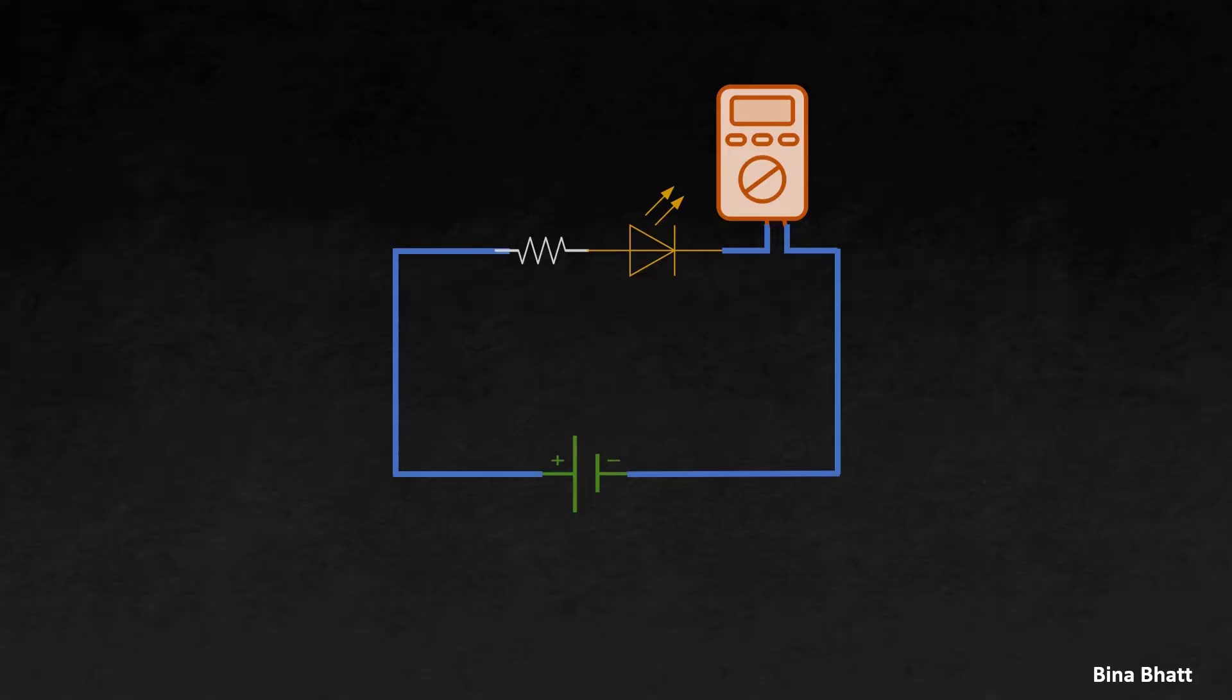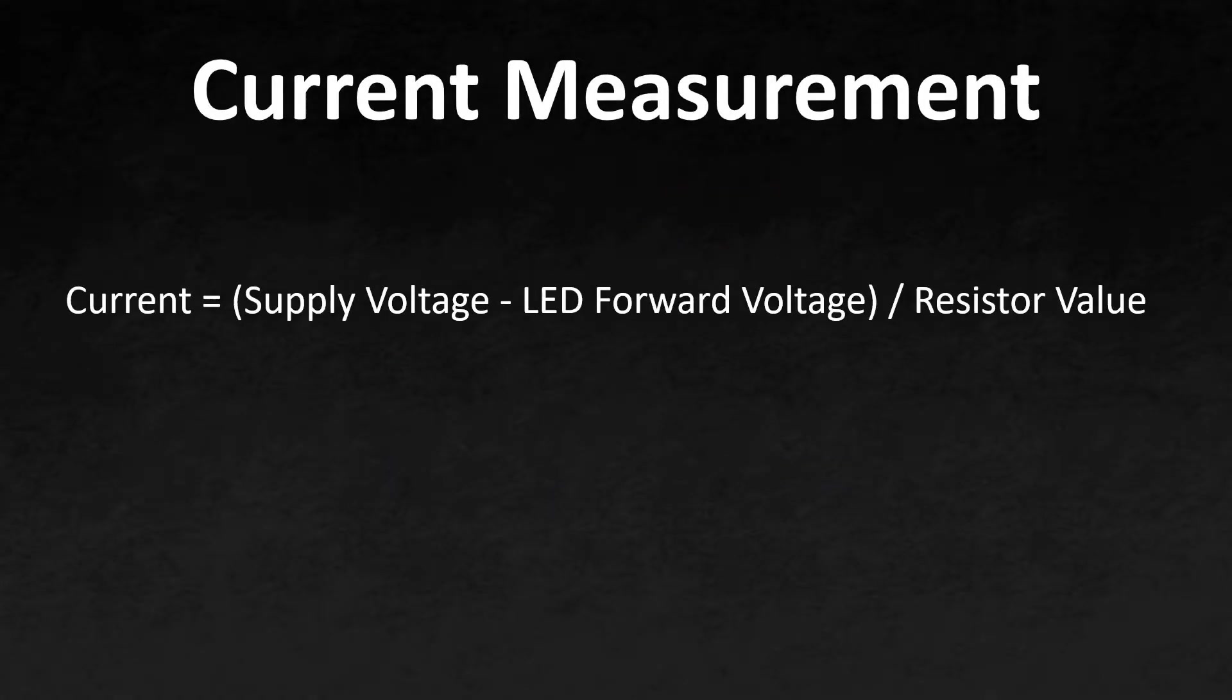Now before I show you the demonstration, let's quickly understand the calculation for current. So according to Ohm's law, we have I equals V by R. So we have to subtract LED voltage from the battery voltage and divide it by 220 ohms. And we get approximately 5 milliamperes.